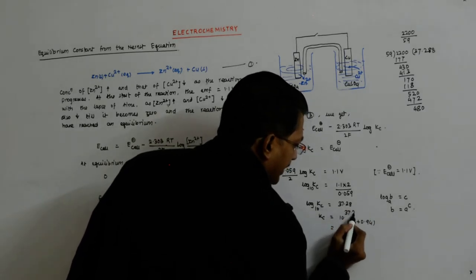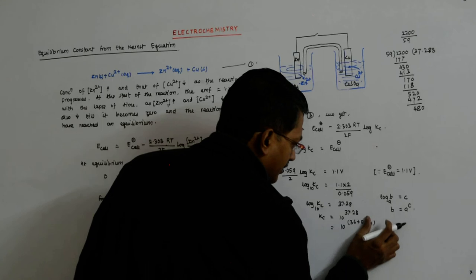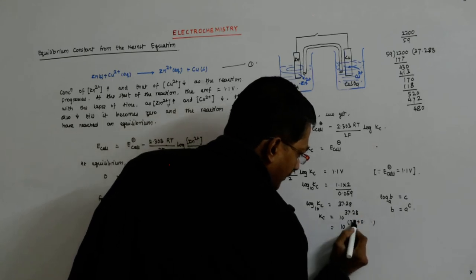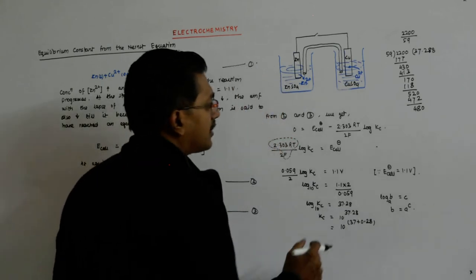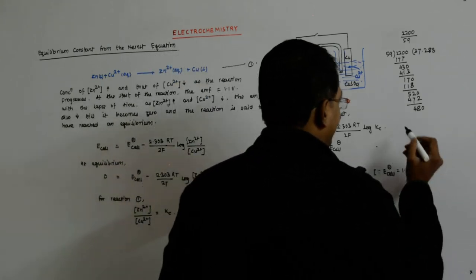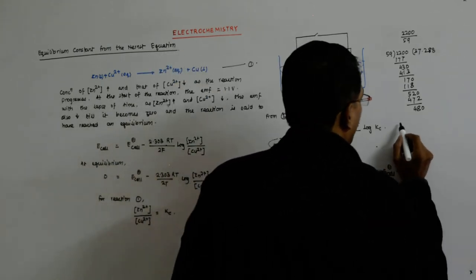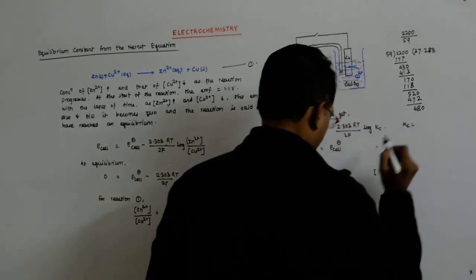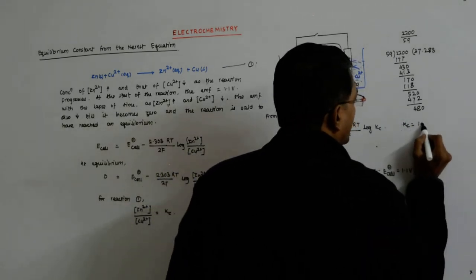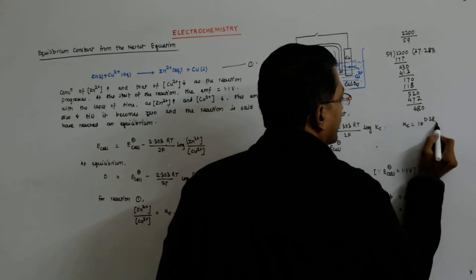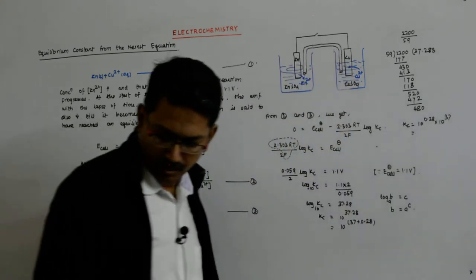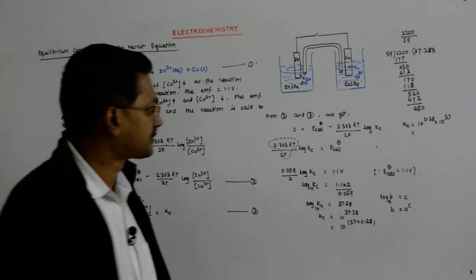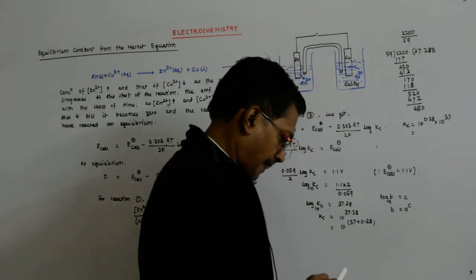So there's 37.28. This becomes 37 and this becomes 28, right? So my Kc becomes 10 to the power 0.28 times 10 to the power 37. Now 10 to the power 0.28 becomes...